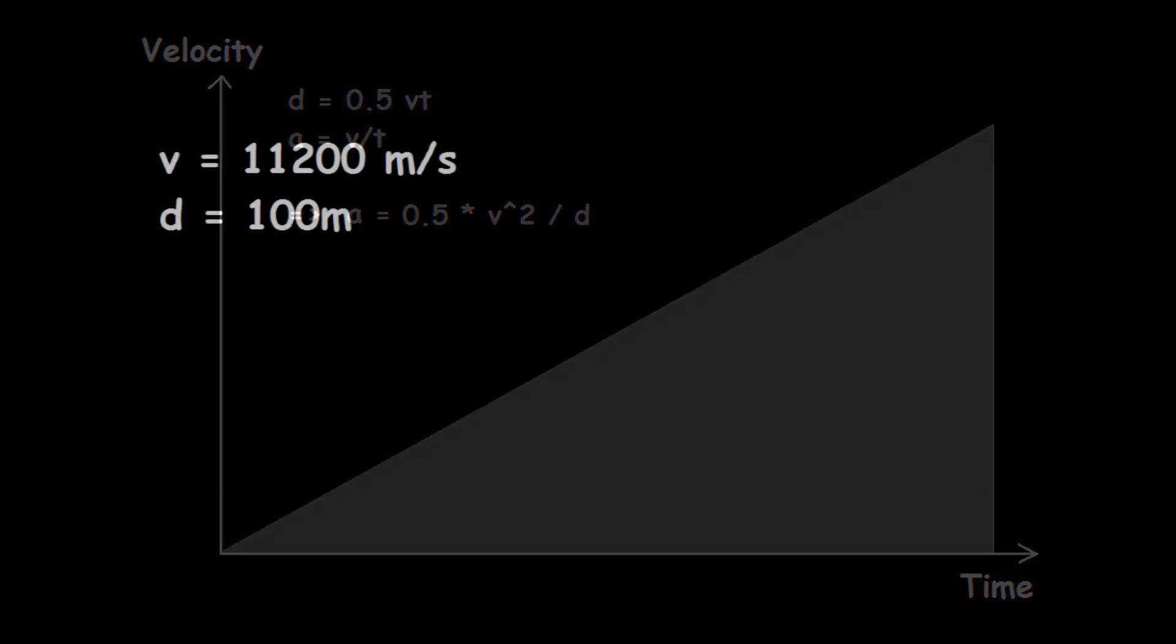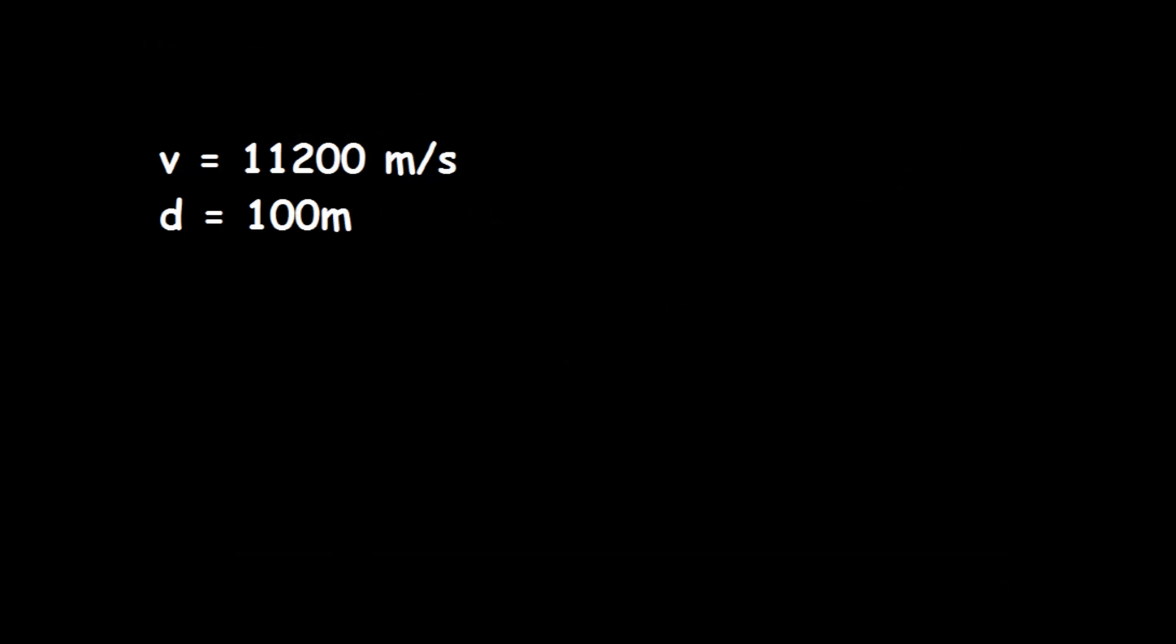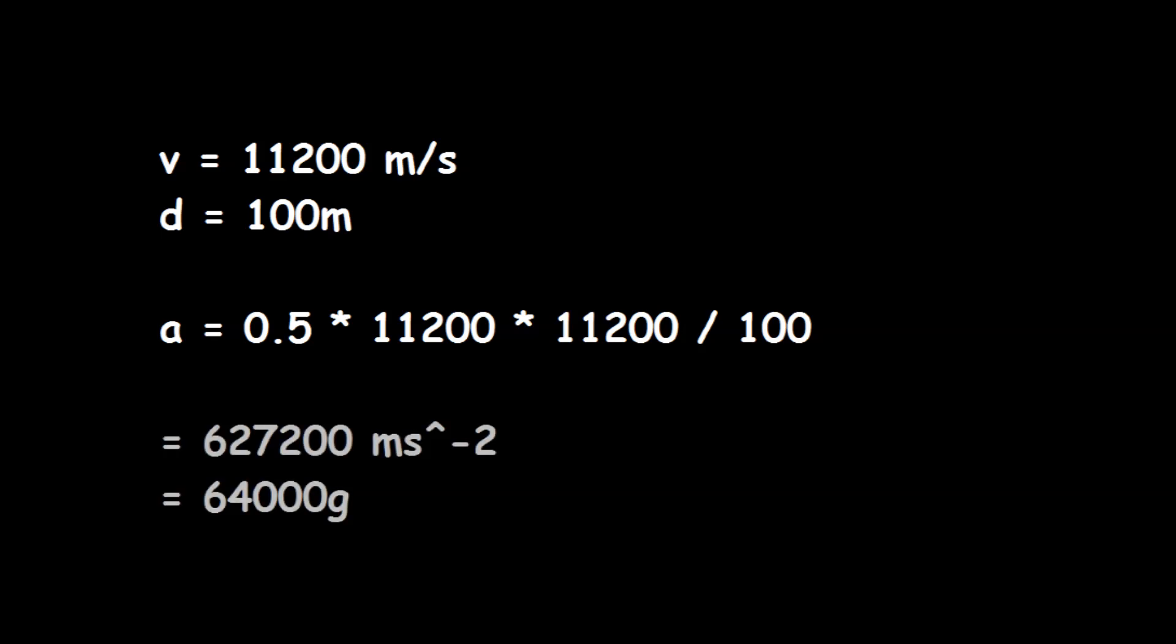Imagine we want to launch a projectile up to Earth's escape velocity, 11.2 kilometers per second. That means that for a 100 meter gun barrel, the acceleration is 64,000 Gs. Oh, ouch.